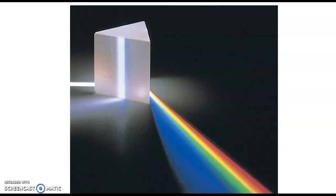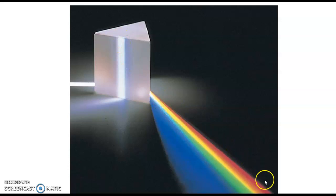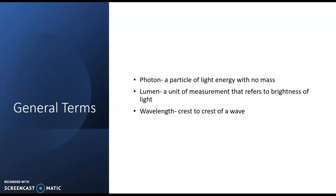We can take visible light and separate out the different wavelengths into different colors. This is a classic picture showing a prism — it's a crystal, and little particles of water can do this as well. White light comes in on one side, and then the prism separates it into Roy G. Biv: the colors of the rainbow — red, orange, yellow, green, blue, indigo, violet.